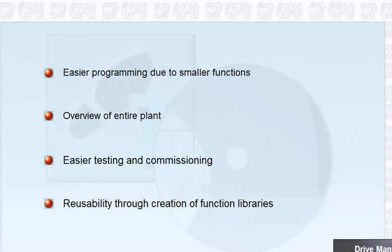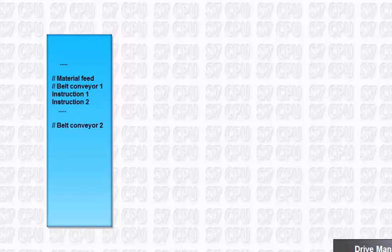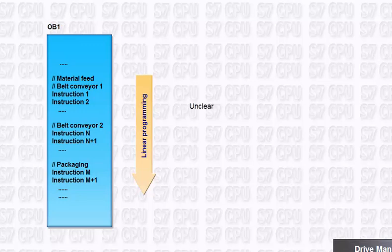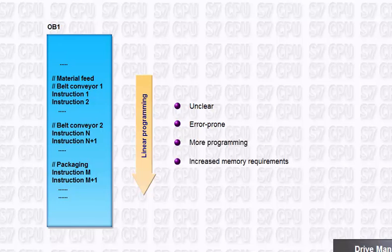Let us take a closer look at an example taken from a possible realization of this plant structure. In principle, an entire program can be instruction by instruction contained in one single block, for example the organization block OB1. This is referred to as a linear program. This type of programming, however, has the disadvantage of not being clear, hence prone to errors, huge programming requirements, and increased memory requirements.